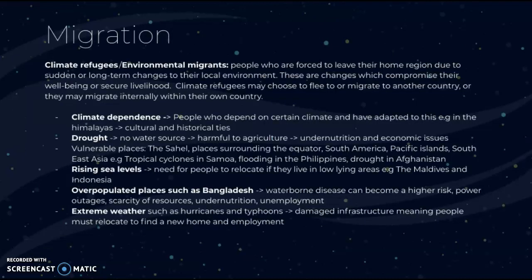Next we have migration. A climate refugee or environmental migrant is a person who is forced to leave their home region due to sudden or long-term change in their local environment and climate — changes which compromise their well-being or secure livelihood. Climate refugees may choose to flee to another country or migrate internally within their own country.